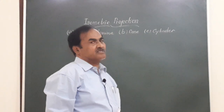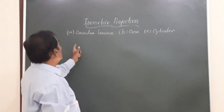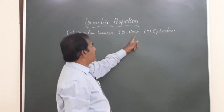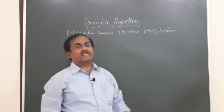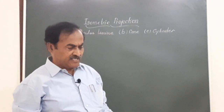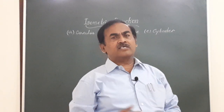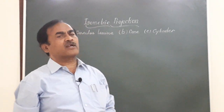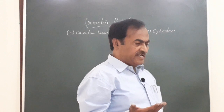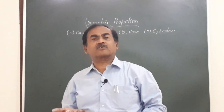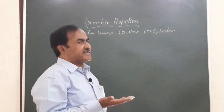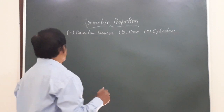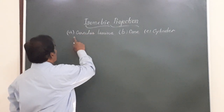Friends, in today's session I am going to teach you how to draw the isometric projection of a circular lamina, that of a cone and also a cylinder. You know very well, in the previous sessions I have told you the circular lamina or cylinder or a cone - they have curved periphery and they do not have any edges. So when any of these circular lamina or thin circular plates are viewed at an angle, they appear as an ellipse. So let me start the session today with the isometric projection of a circular lamina.